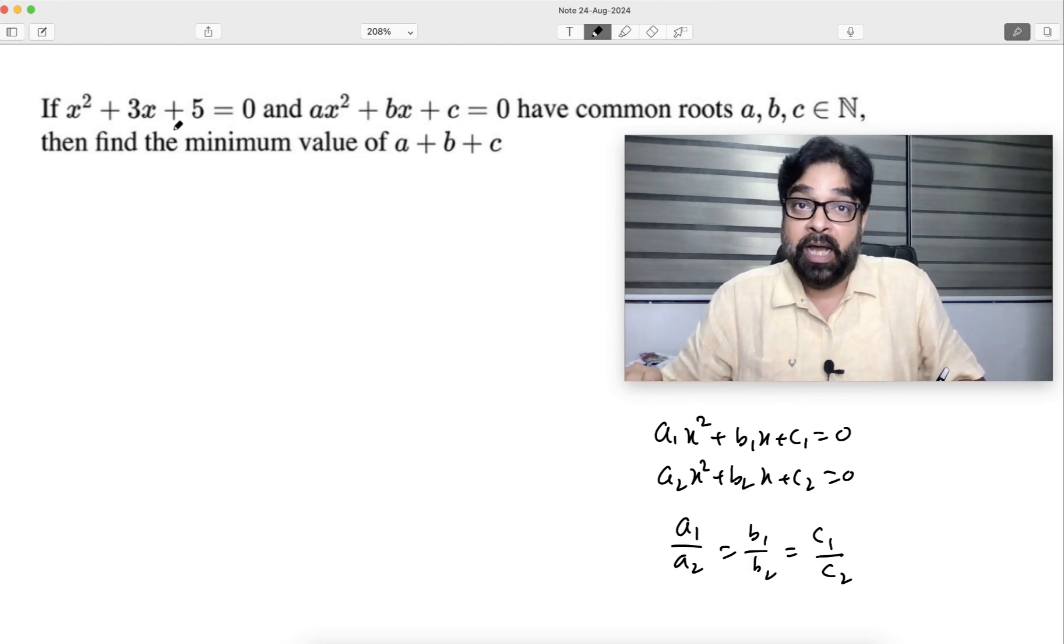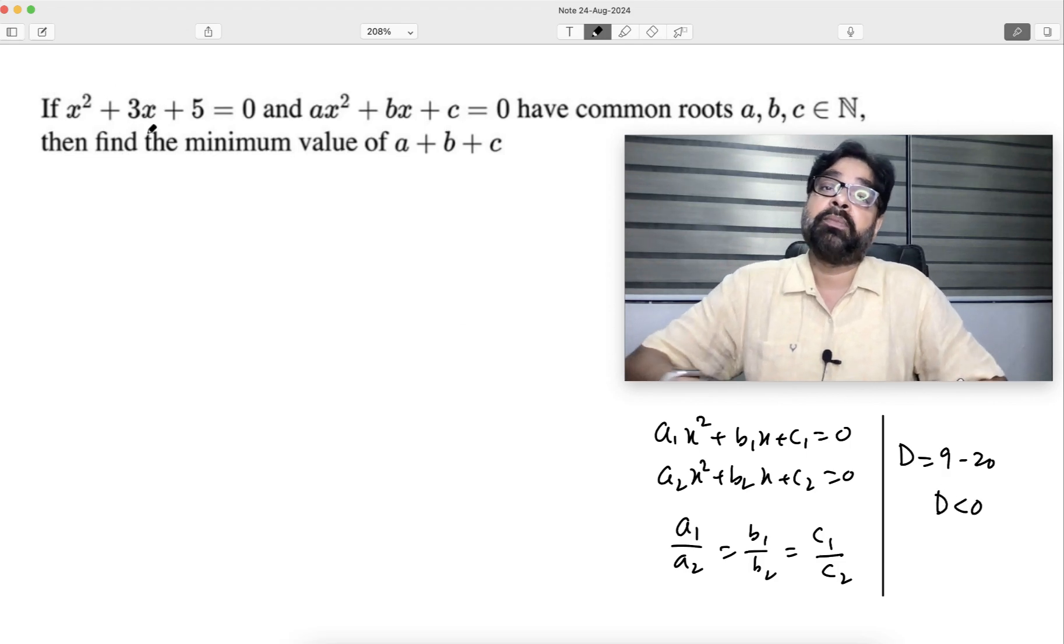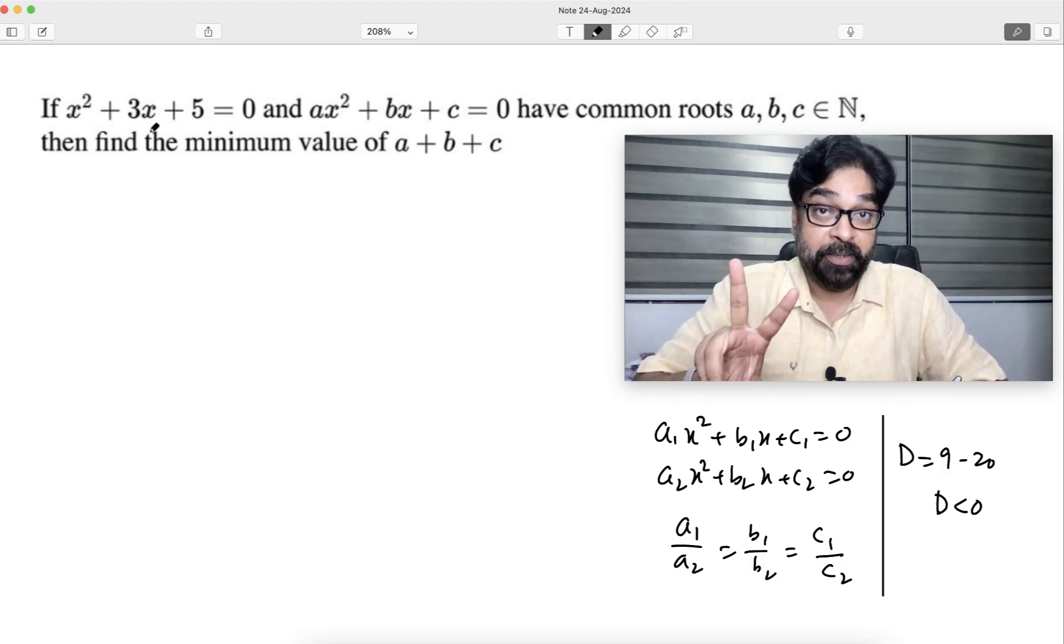What is that saying? First equation is totally known. I can find out the roots of this, but I do not need to find. I will just check discriminant. What is the discriminant of this first equation? D = 9 - 20, negative. D is negative. D negative means roots will be imaginary. Both roots will be imaginary.